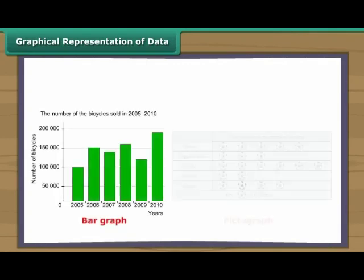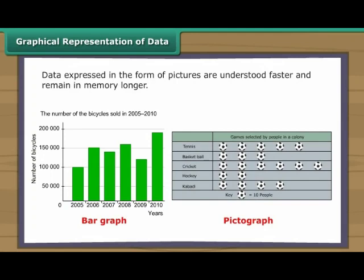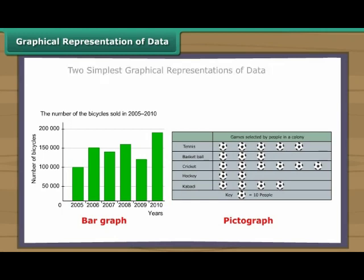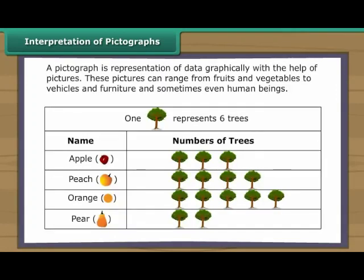Graphical representation of data: A picture is worth a thousand words. Data expressed in the form of pictures are understood faster and remain in memory longer. Let us look at two simple graphical representations of data: pictographs and bar graphs. A pictograph is a representation of data graphically with the help of pictures. These pictures can range from fruits and vegetables to vehicles and furniture and sometimes even human beings.